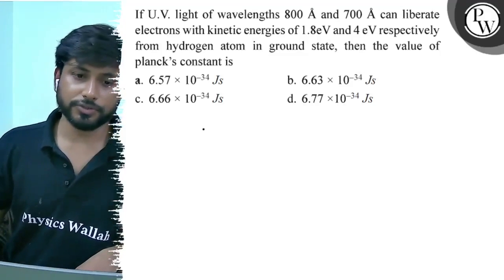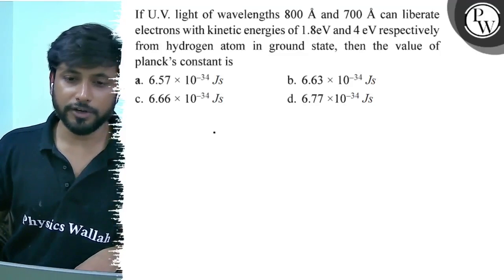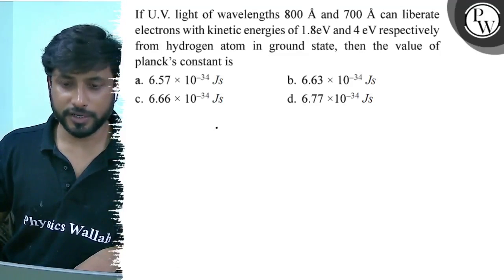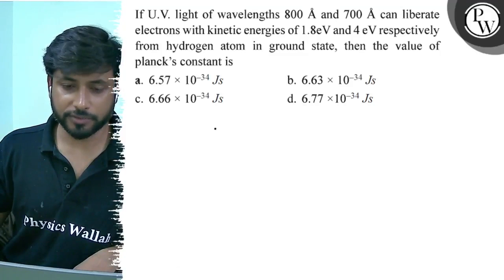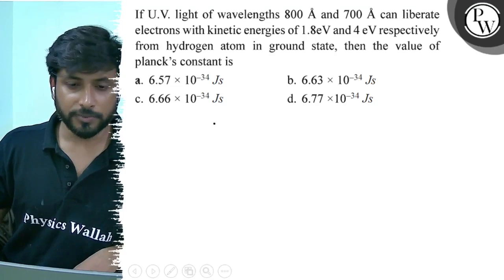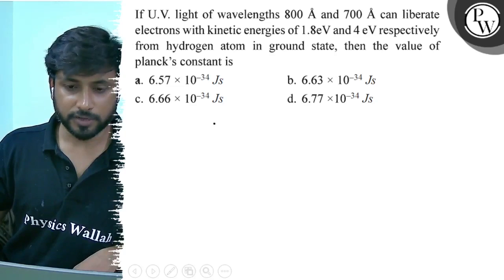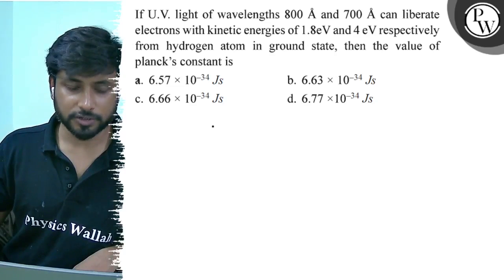Hello, let us see this question. If UV light of wavelength 800 angstrom and 700 angstrom can liberate electrons with kinetic energy 1.8 electron volt and 4 electron volt respectively from hydrogen atom in ground state, then the value of Planck's constant is?